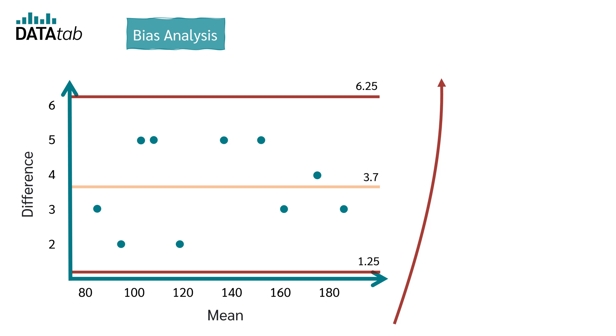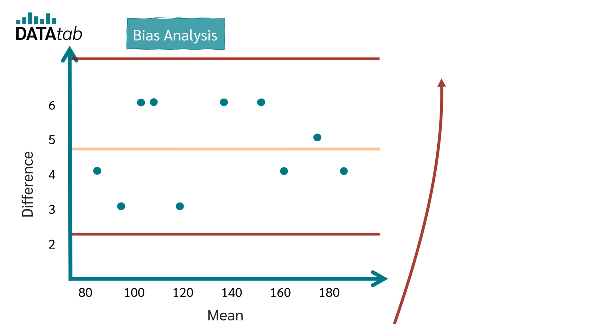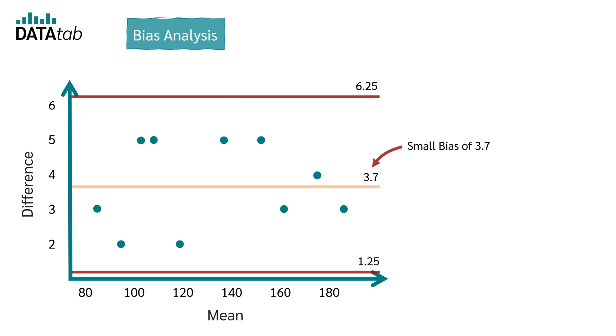A mean difference drifting away from zero signals systematic bias. In our example, it looks like we have a small bias of 3.7.